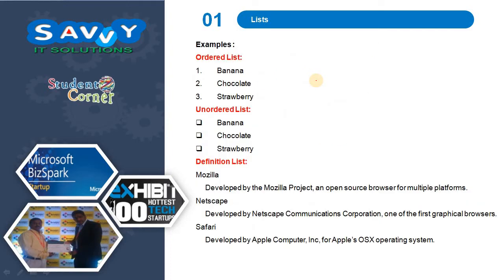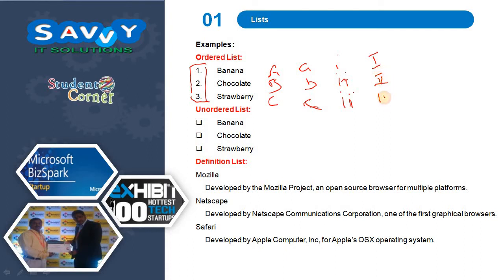An ordered list can be represented with individual items prefixed as capital ABC, small ABC, Roman numerals, or 1, 2, 3. For an unordered list we have square, circle, and disk. In a definition list, a definition term is followed by its definition.